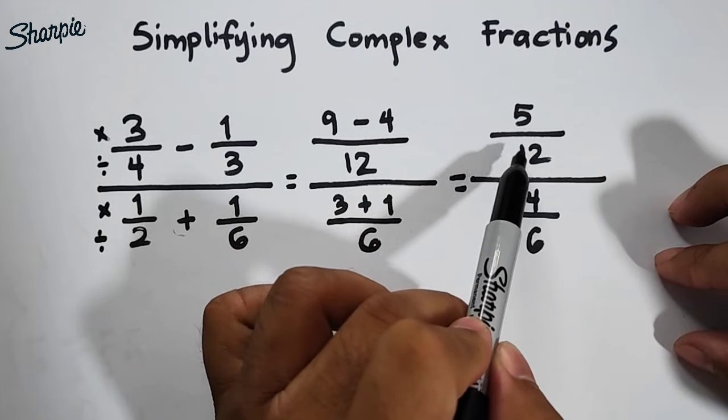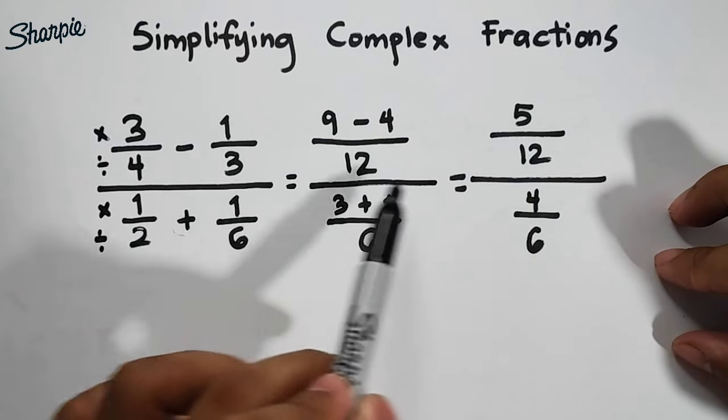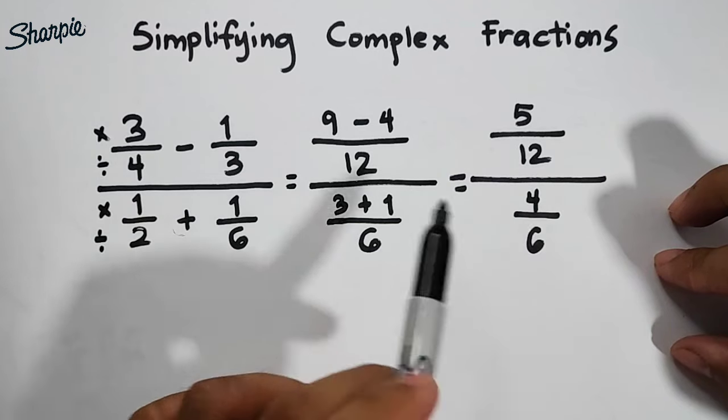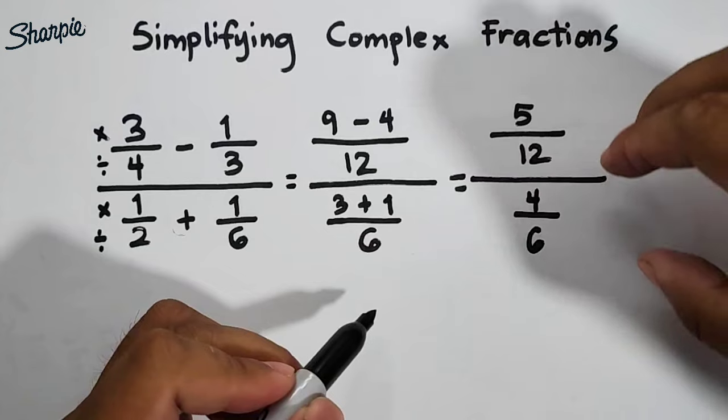So what we have now is this given fraction. We have 5 over 12 from 3 over 4 minus 1 over 3, all over 4 over 6 from 1 half plus 1 over 6.